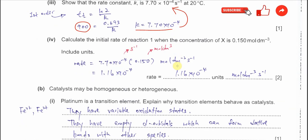Part 4: calculate the initial rate of Reaction 1 when the concentration of X is 0.15 mol per dm³. This is straightforward because the k constant has already been obtained and we know it's first order. Substituting k and the given concentration of 0.15 mol per dm³, the initial rate is 1.16 × 10⁻⁴ mol per dm³ per second.